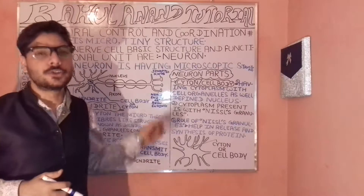I hope you've understood the concept of neurons and their parts: the cytone, the dendrite, and the axon. If you like the videos and lectures, please subscribe, like, and comment below so I know what concepts you want to learn next. Please like, subscribe, and share Rahul Anand Tutorials. Thank you very much.